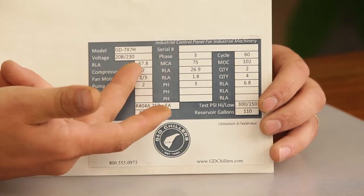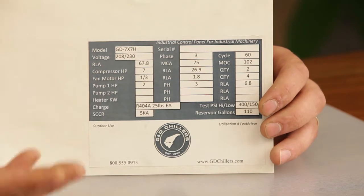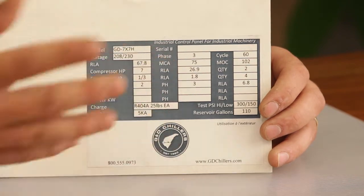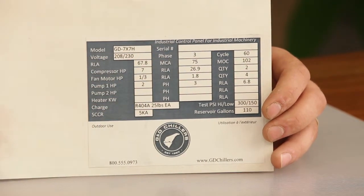Down here you've got your RLA, which is the run load amps of the machine. And here you've got the MOC and the MCA. This is what we're going to use to size the breaker for your machine.